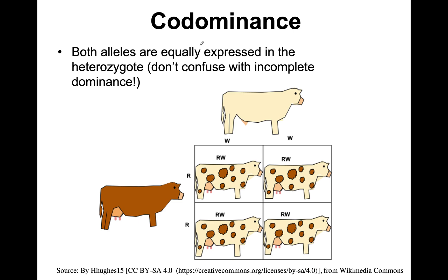Another exception is the concept of co-dominance. This is a situation where instead of one allele being completely or partially dominant, there is no dominant and recessive relationship — both alleles are fully expressed in a heterozygote. Don't confuse incomplete dominance with co-dominance; they're completely different. An example is cow fur color: a white cow is homozygous for the white allele, a brown cow is homozygous for the brown allele, but in a heterozygote both alleles are fully expressed — you don't get light brown, you get both white and brown.